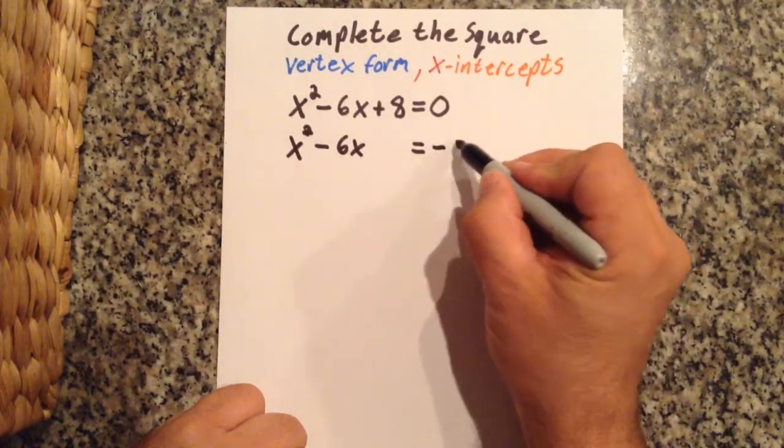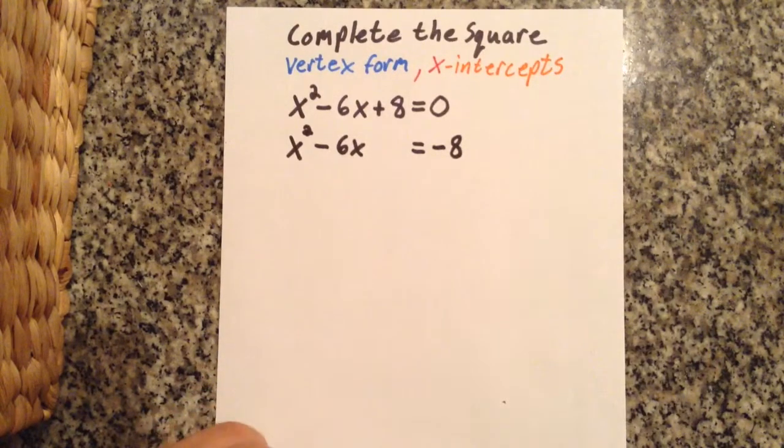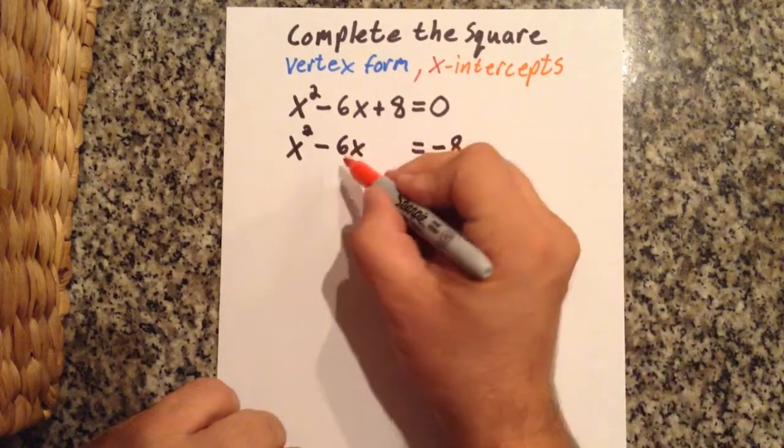First thing you want to do is kick this 8 over to the other side, so I subtract 8 from both sides.